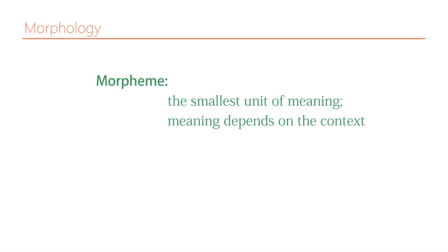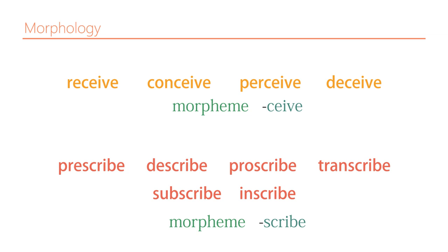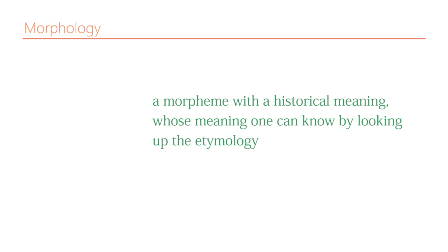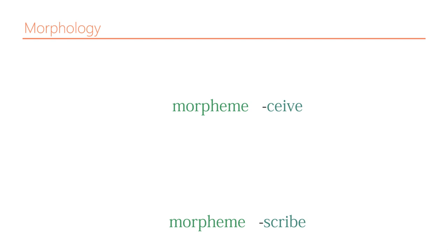So we have two things: first, we know it must mean something; second, in every case the meaning can be interpreted differently depending on context. The meaning depends on the morphological context — what morpheme comes before or after it. Because these morphemes have this relation to etymology, traceable through the history of the word but not directly present, they are called 'etymemes.' So these morphemes are etymemes.